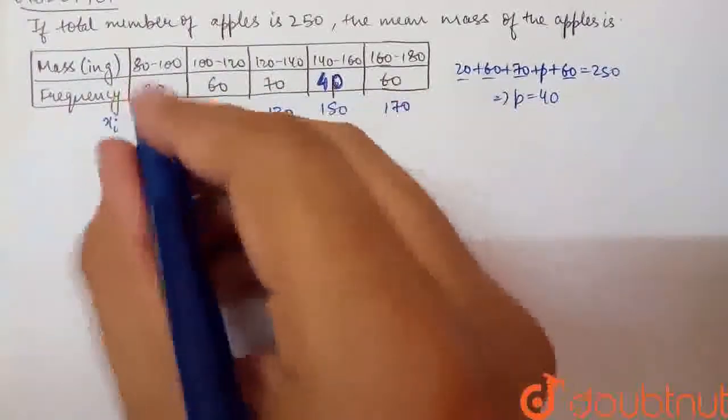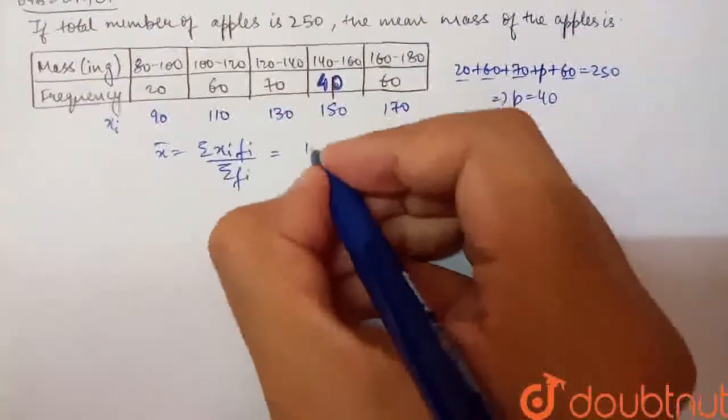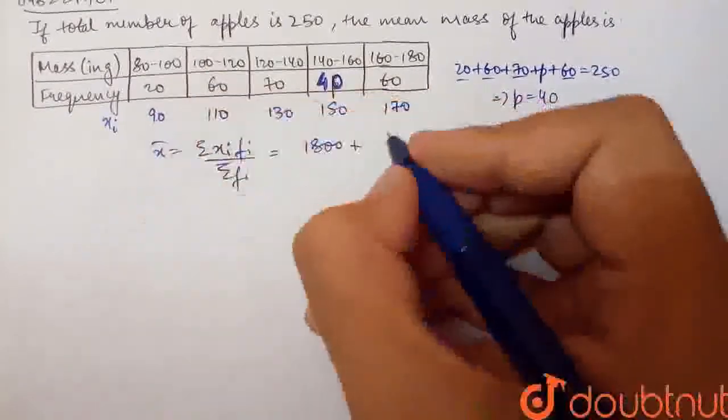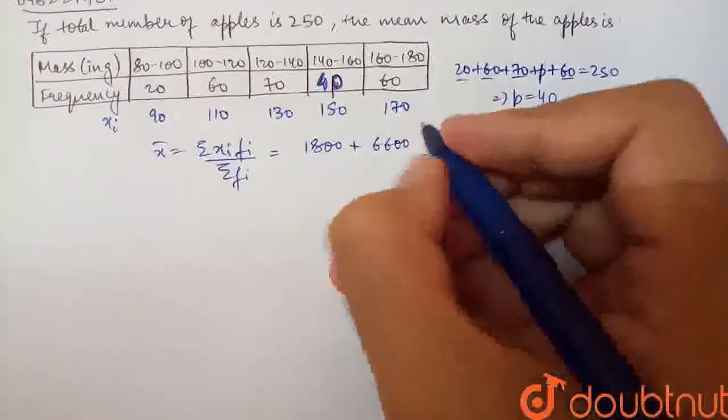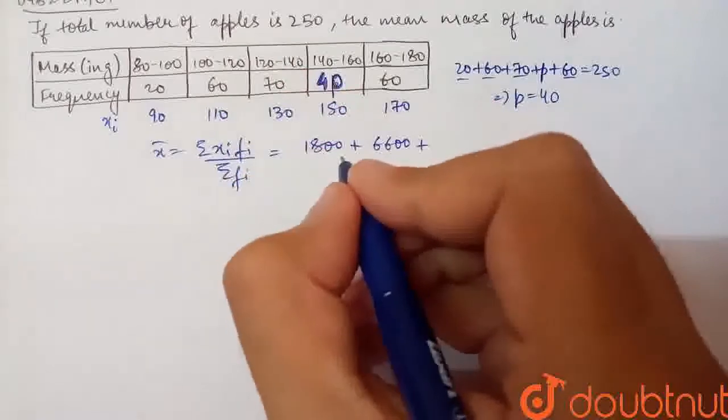So Xi Fi is the product of these two. That is, 9 into 20 is 1800, plus 6 into 11 which is 6600, plus 7 into 13